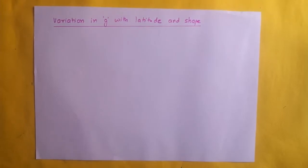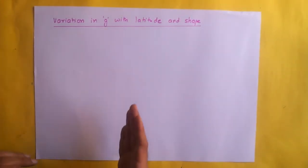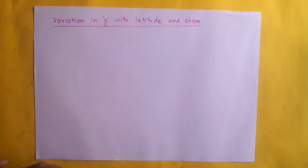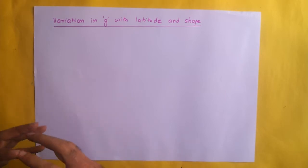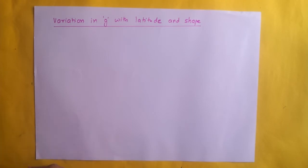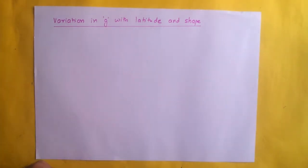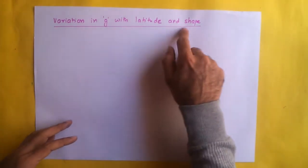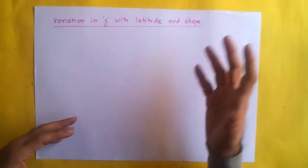We continue our discussion on variation in G. In the previous two videos we looked at variation in G with depth and with altitude, and now we are going to see how G varies with latitude and shape of the earth.